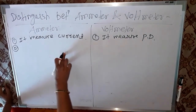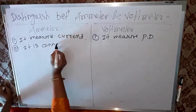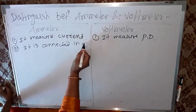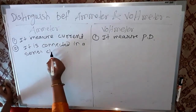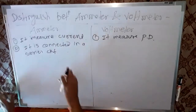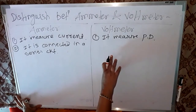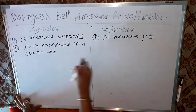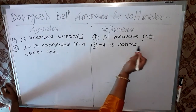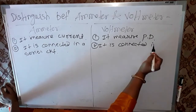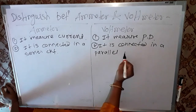Second point: ammeter is connected in series in the circuit. In opposite, voltmeter is connected in parallel between two points.